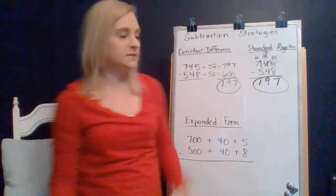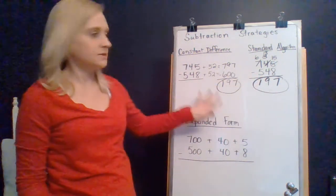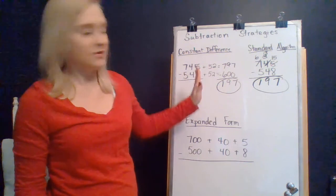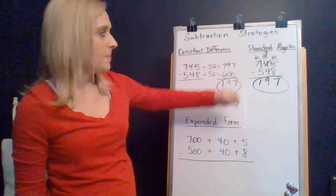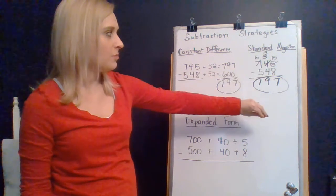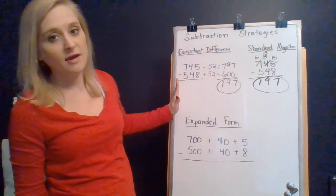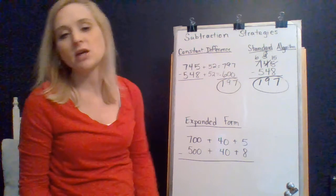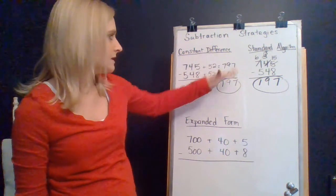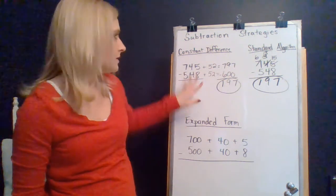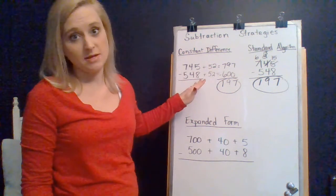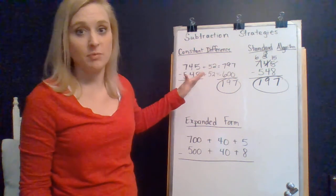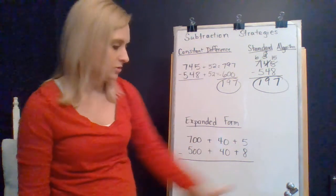So, we, in fact, got the same answer as when we were doing the constant difference. Now, you can take a look and see the differences. This one required a lot of regrouping. And this one, we did a lot of additions to make this subtraction a lot easier. In fact, we didn't even have to regroup at all with this constant difference strategy with this particular problem. Does it always work that nicely with every problem? No. You have to think about the numbers before you jump in.